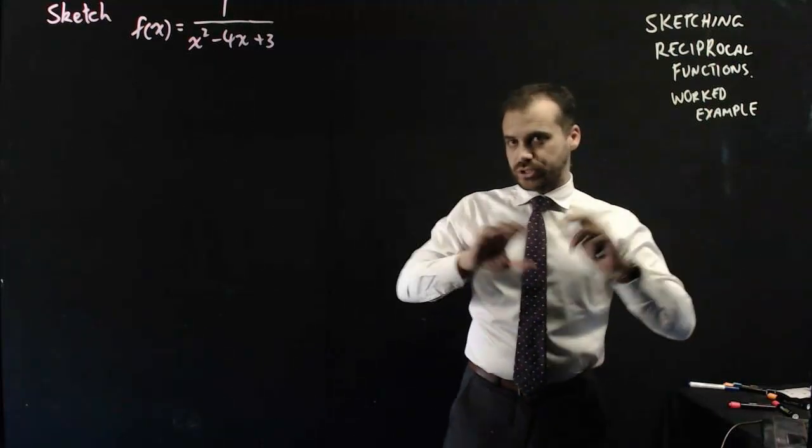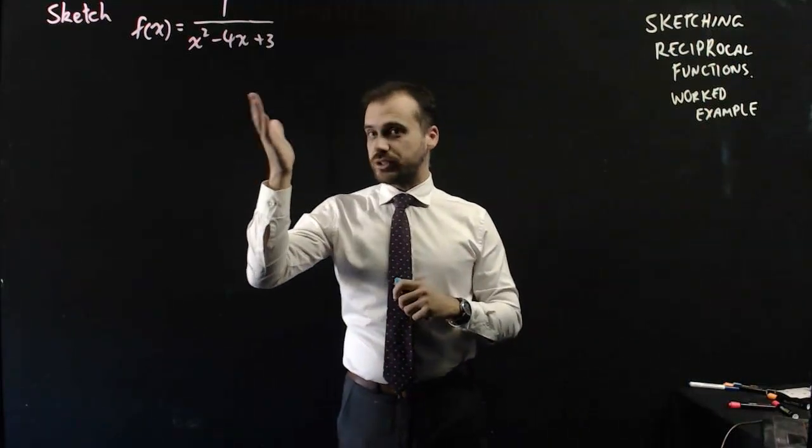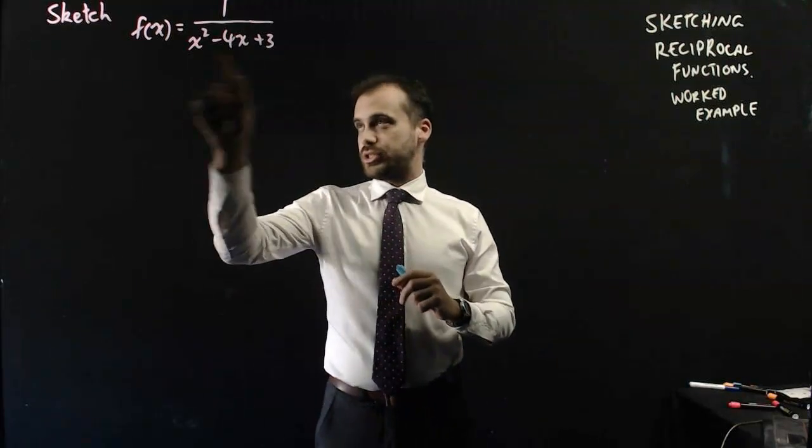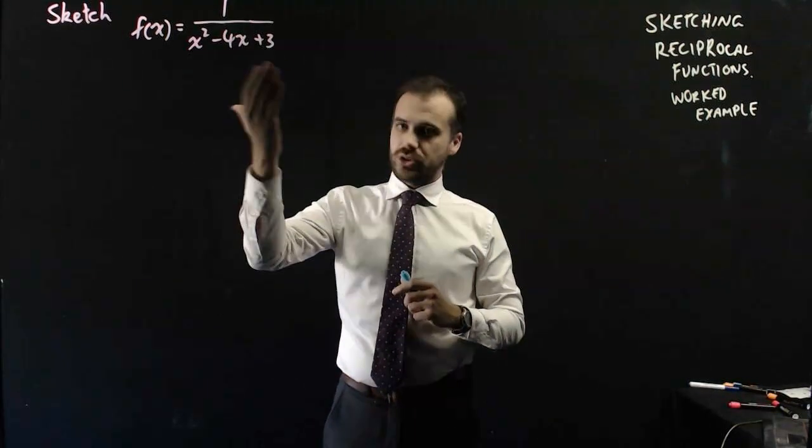So I'm just going to sketch a reciprocal function. Worked example, here's the function I'm going to sketch. Now, the way to do it, sketch the polynomial on the bottom. This is a quadratic.